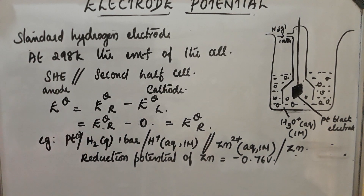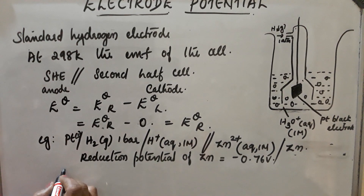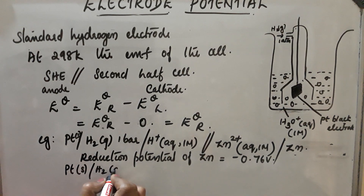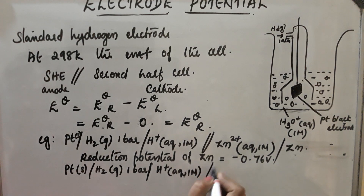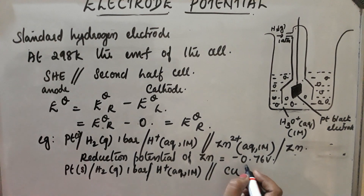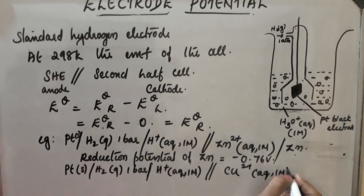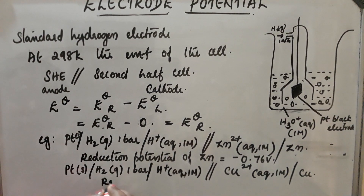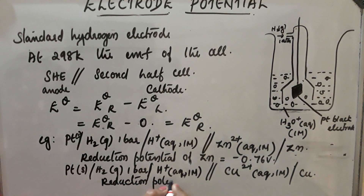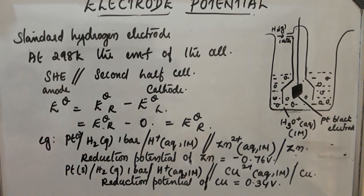Similarly for copper: the standard hydrogen electrode is at the anode and copper in one-molar Cu²⁺ solution at one bar pressure is at the cathode. The reduction potential of copper obtained is +0.34 V. Like this we can obtain the standard electrode potentials.